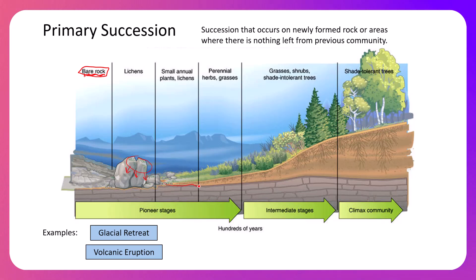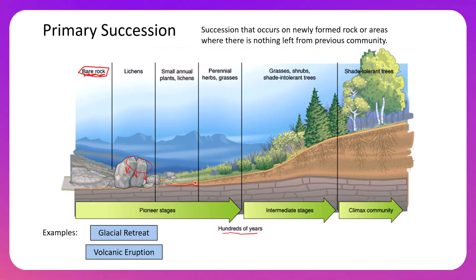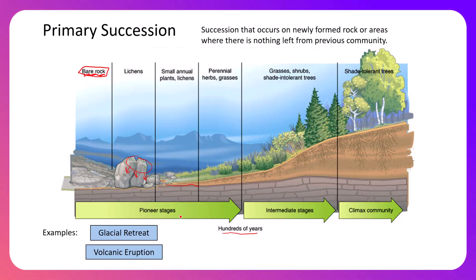As time progresses — and this is basically a graph with time on the x-axis — this process typically takes hundreds of years. It takes a while for chemical weathering and erosion to deposit soil. Wind also brings in foreign material that helps build up biomass, which eventually becomes soil. As time progresses, we move through pioneer stages, intermediate stages, and climax community, and the soil gets deeper and deeper.